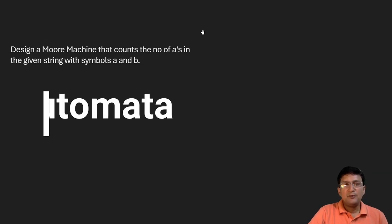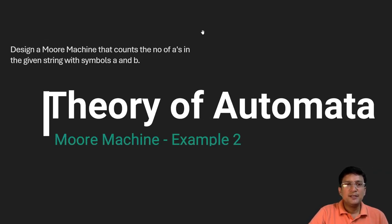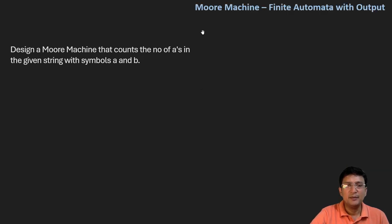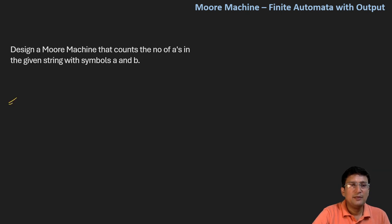Let's take one example for the Moore machine. It says that we have to design a Moore machine that counts the number of A's in the given string with the symbols A and B. It means that the input alphabets are A and B, and we have to count the number of A's.